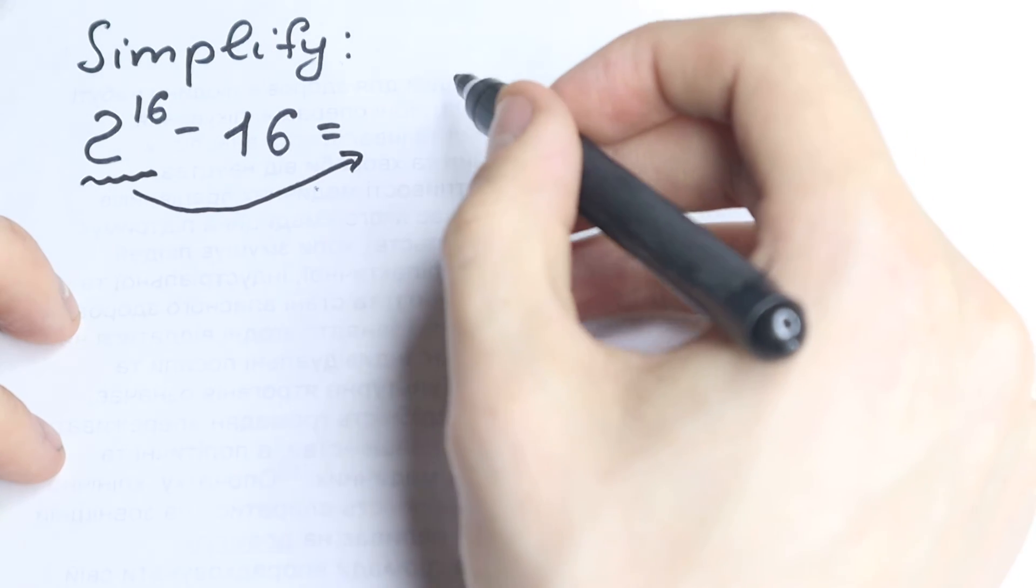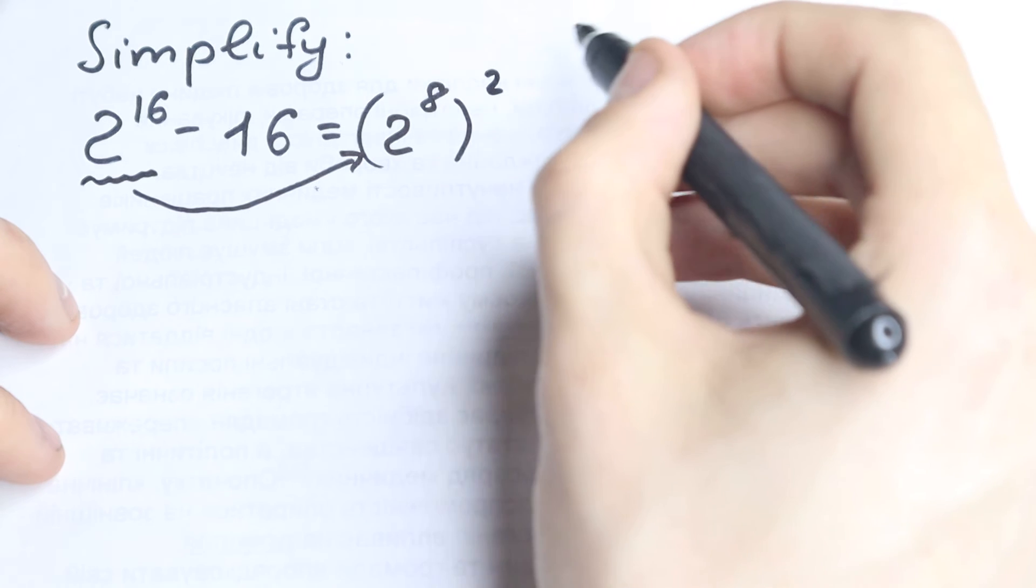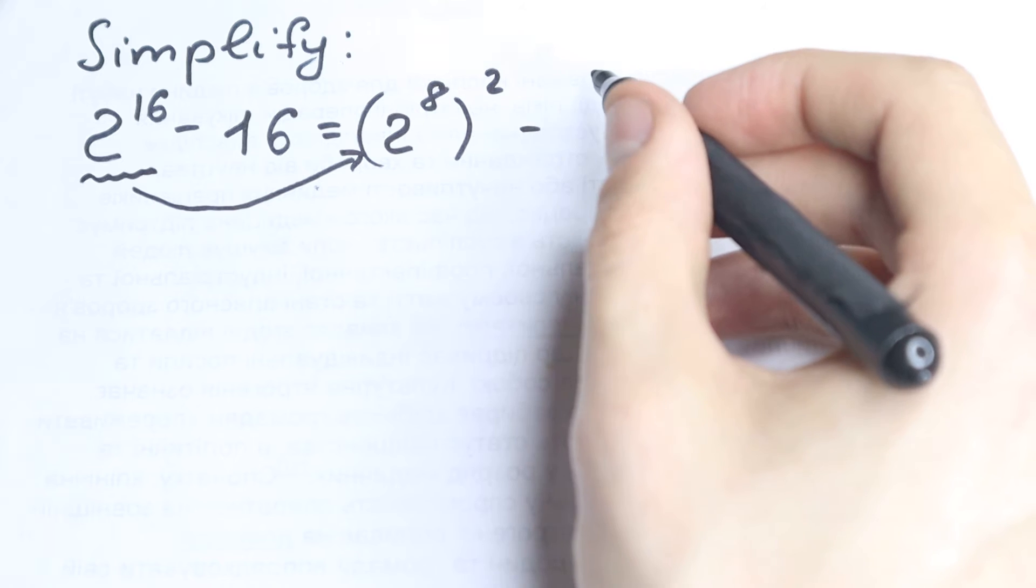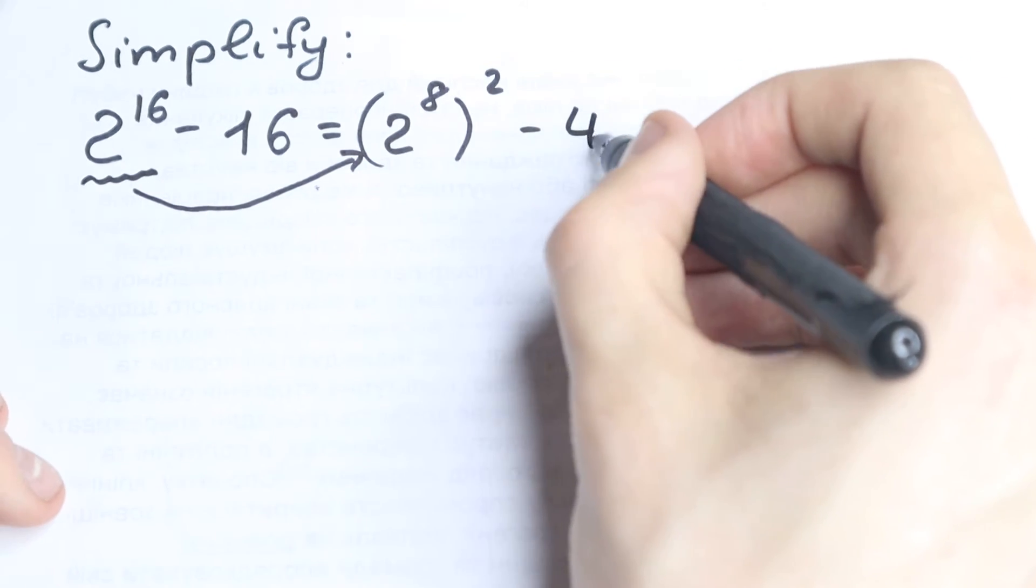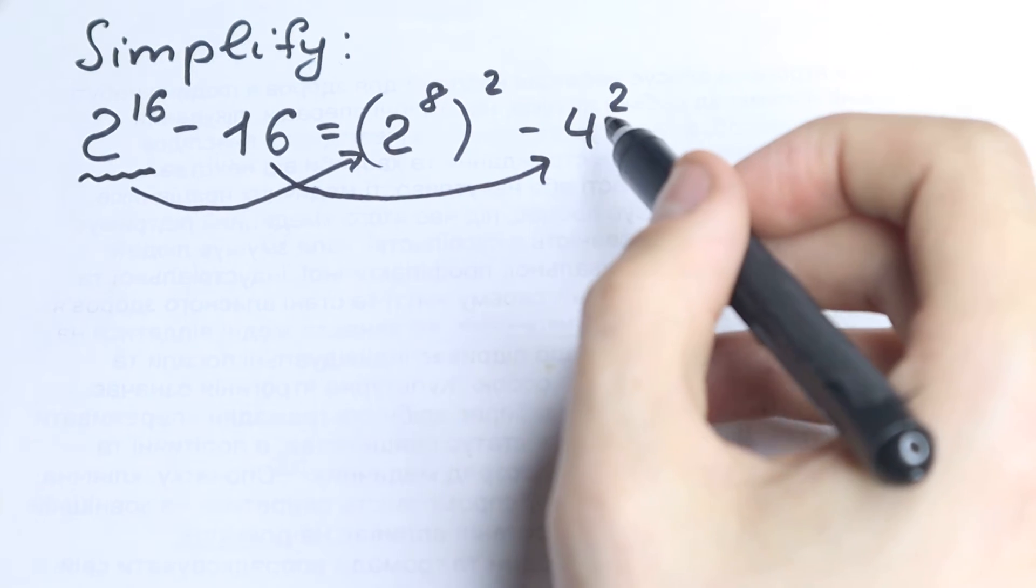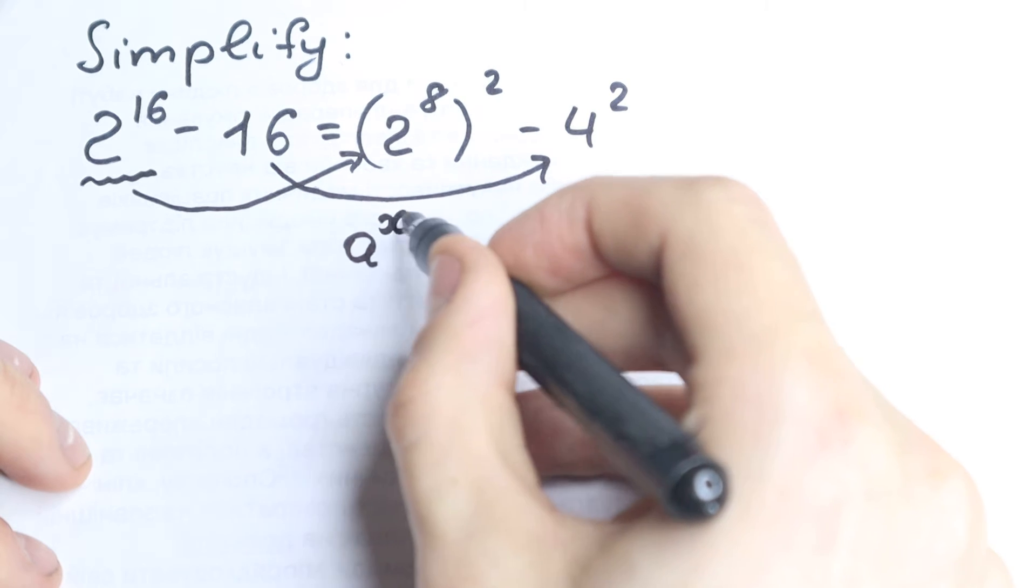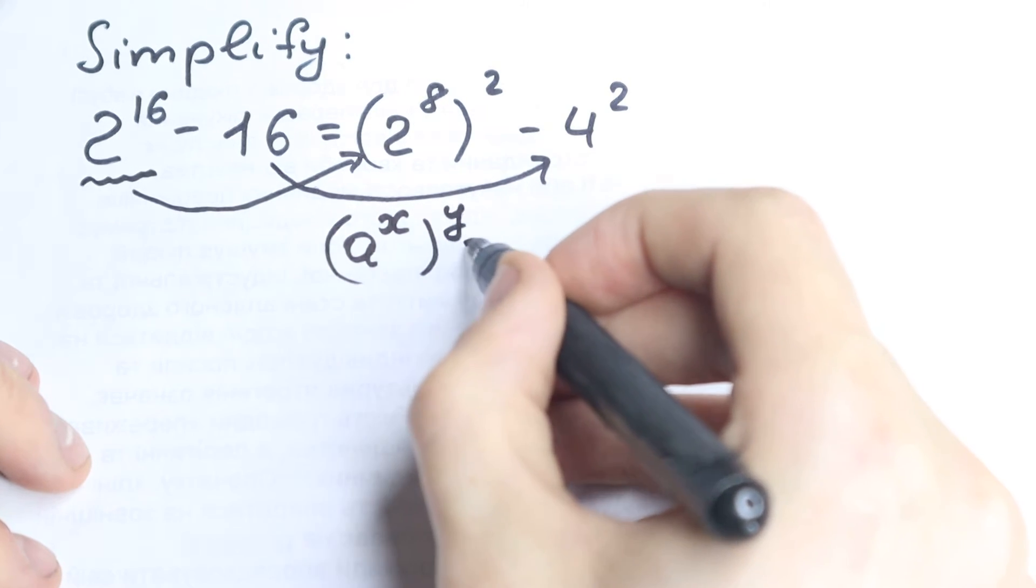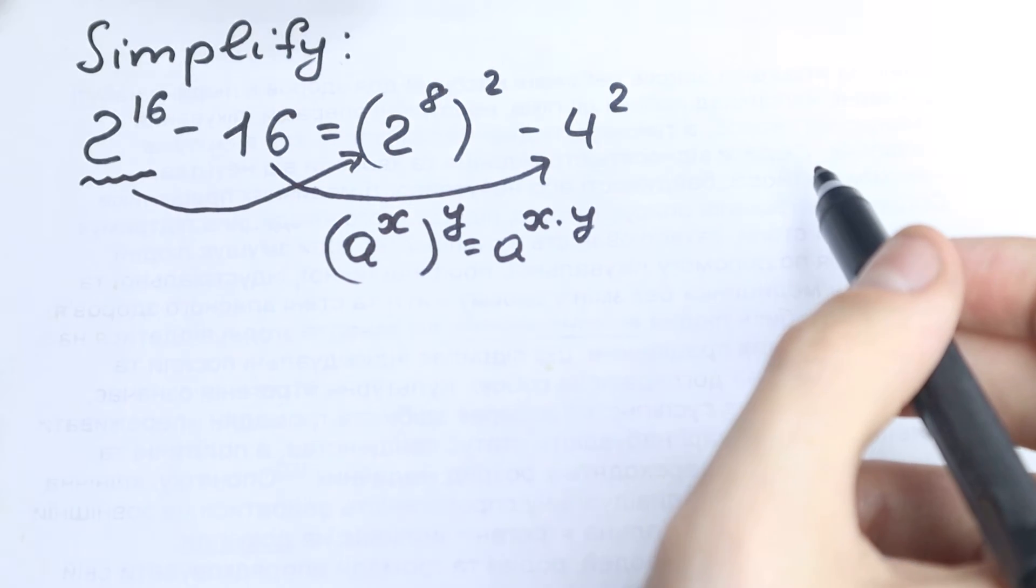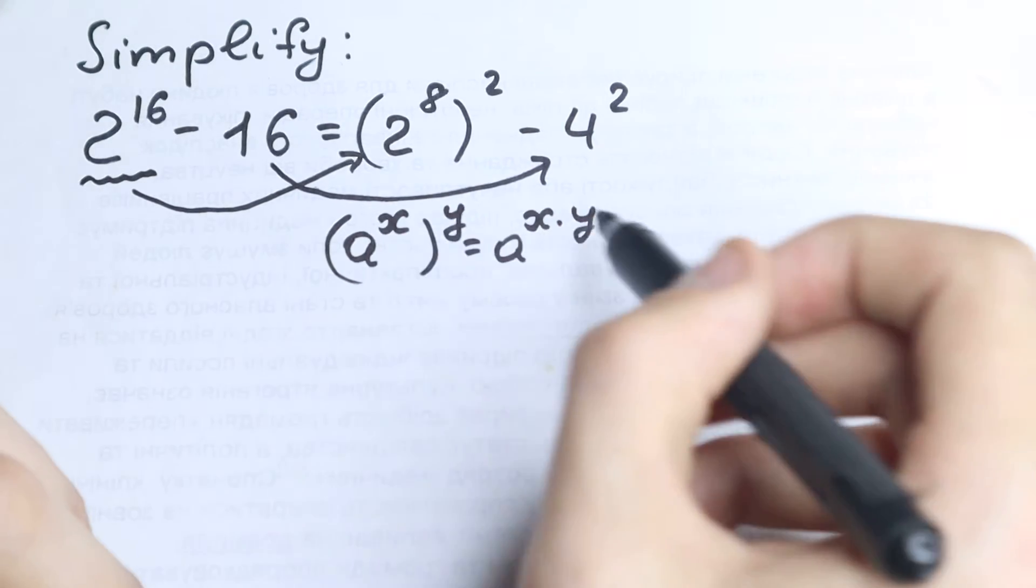So instead of 2 to the power 16, let's write 2 to the power 8 to the power 2. Right now we have square right here, and minus 16. Everyone knows about this value because this is like a classic case. This is 4 square, so we write 16 as 4 square. Nothing changed for us. If we have a to the power x raised to the power y, we will have a to the power x times y. From here we change nothing because we will have 2 to the power 8 times 2, which equals 2 to the power 16.